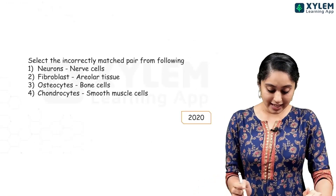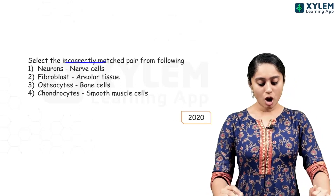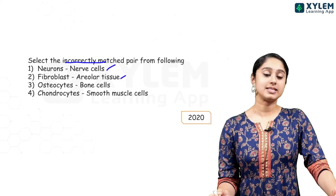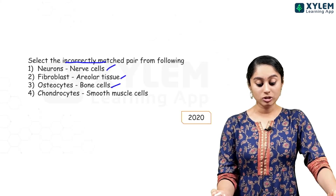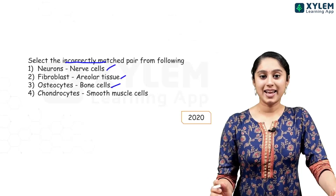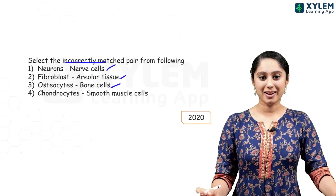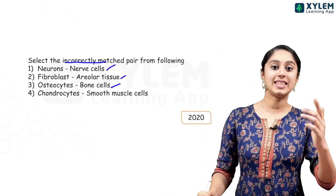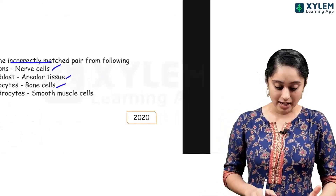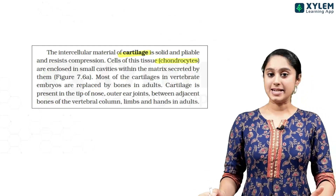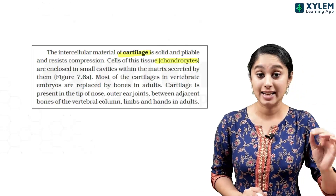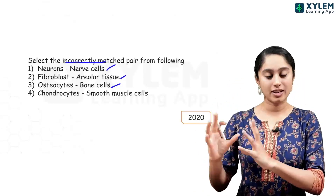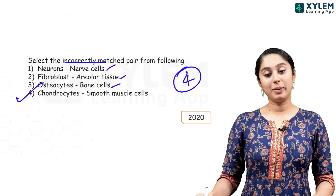A 2020 question: select the incorrectly matched pair. Neurons are nerve cells — correct. Fibroblasts are areolar tissues — correct. Osteocytes are bone cells — correct. Chondrocytes are smooth muscle cells — that is incorrect. Chondrocytes are specific cells found in cartilage, also called cartilaginous cells. So chondrocytes being called smooth muscle cells is the wrong match — option 4 will be the right answer.